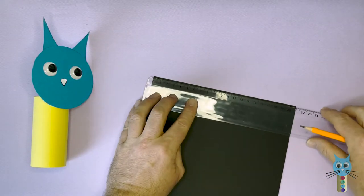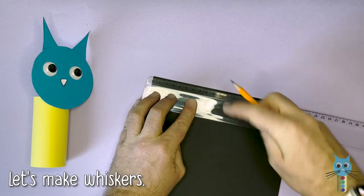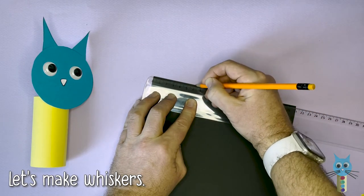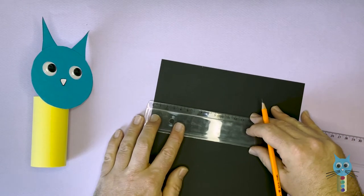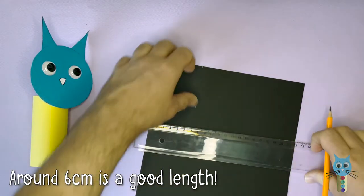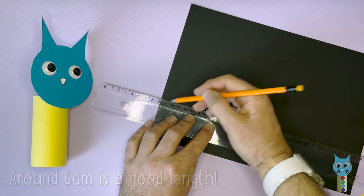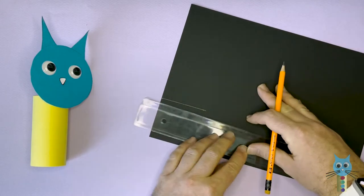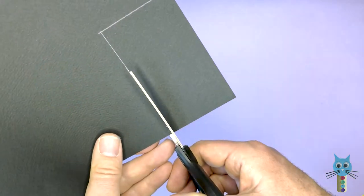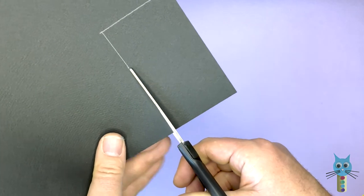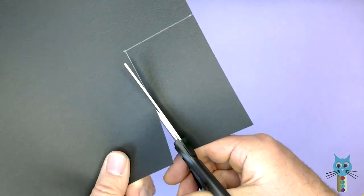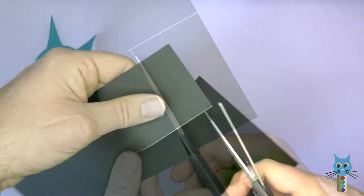The next step is to make some whiskers. Take some black card and measure out six centimeters. And then just draw a line along the six centimeter width like this. You can draw it out around 10 centimeters. And then simply go ahead and cut out this piece of black card.